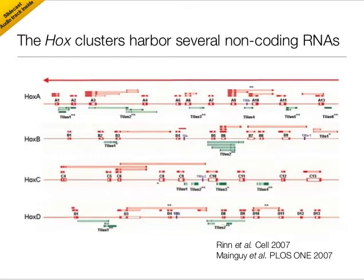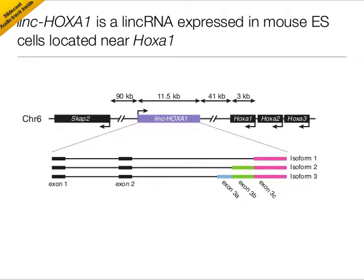We began by looking at the Hoxay cluster of genes in mouse, which is a highly conserved cluster of genes that are key developmental regulators. Tiling arrays have revealed the presence of many non-coding RNAs in the Hox clusters, and we wanted to see what these non-coding RNA did. We focused initially on a long non-coding RNA we called lincHoxay1, that is 3' of the Hoxay1 gene. The RIN lab had identified this long non-coding RNA from RNA-seq data, finding that it is expressed in mouse embryonic stem cells.